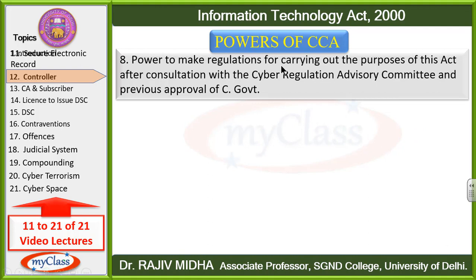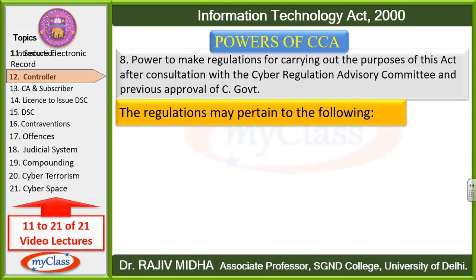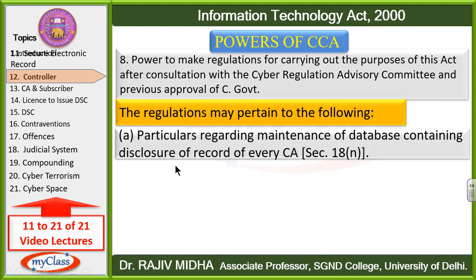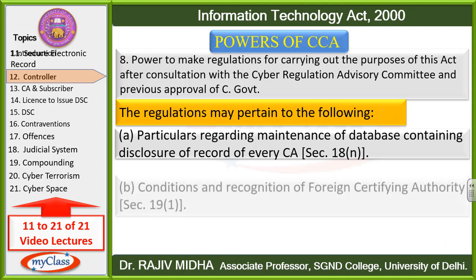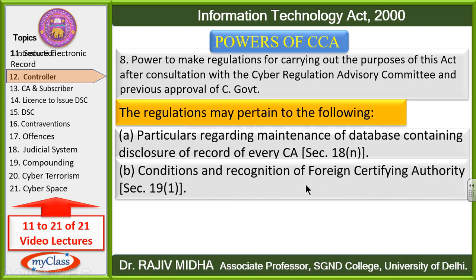Eighth point: power to make regulations for carrying out the purposes of this act after consultation with the Cyber Regulation Advisory Committee and previous approval of Central Government. Controller ke paas is baat ki power hai ki woh rules regulations bana sake taaki is act ko bhaali bhaanti laagu kiya ja sake. Iske liye woh Cyber Regulation Advisory Committee ke saath consult karega aur Central Government ka prior approval lega. The regulations may pertain to: A) Particulars regarding maintenance of database containing disclosure record of every CA; B) Conditions and recognition of Foreign Certifying Authority — Section 19, Subsection 1 — jinke base ke upar foreign certifying authorities ko recognition di jaayegi, un conditions ke liye bhi apne regulations bana sakta hai.